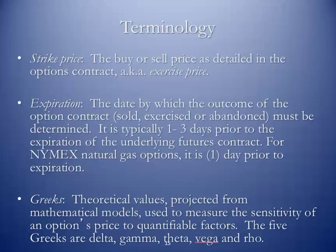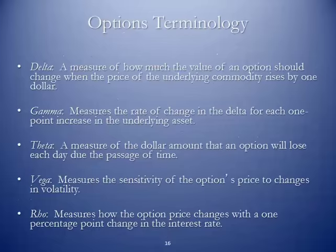The Greeks are the theoretical values projected from mathematical models used to measure the sensitivity of an option's price to quantifiable factors. When we refer to the Greeks, we're talking about delta, gamma, theta, vega, and rho. I'm not going to hold you responsible for these, but these are the definitions of the Greeks themselves.